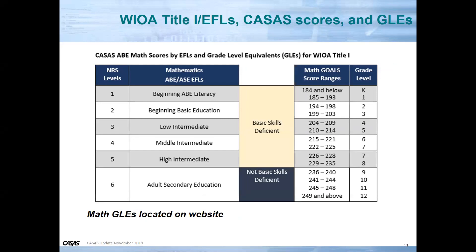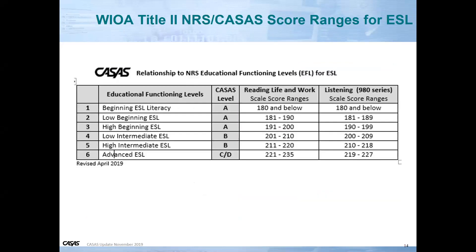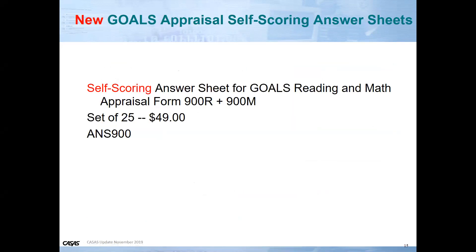The same goes for grade level equivalents for math. We are excited to announce that for those of you who use both eTests and paper tests, we have self-scoring answer sheets available. No need for the overlays we used before. We now have self-scoring answer sheets for the Goals Math and Reading and Math appraisal forms 900R and 900M.